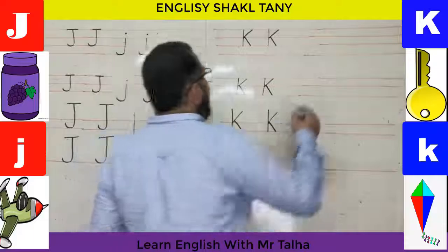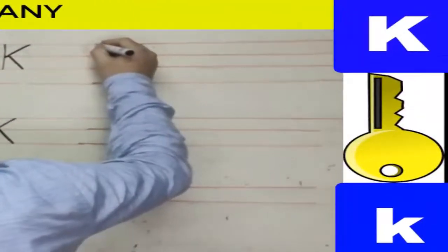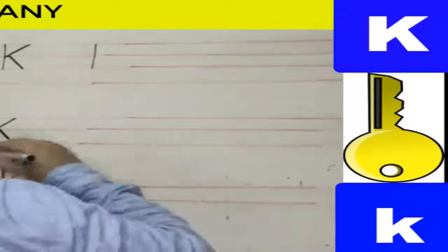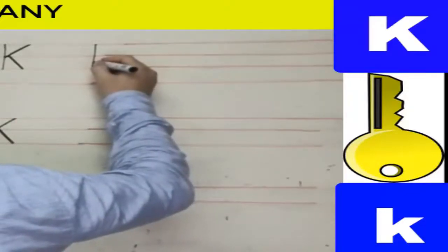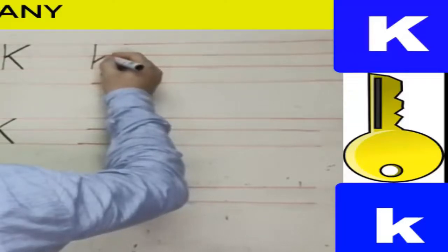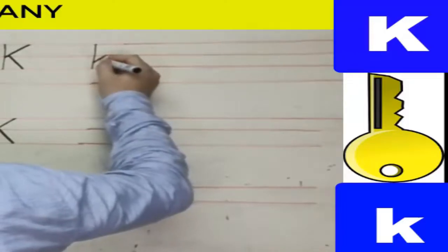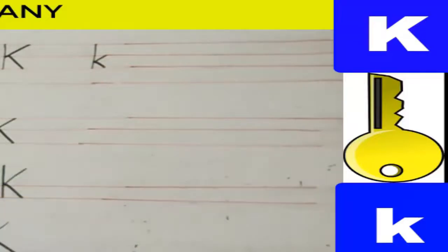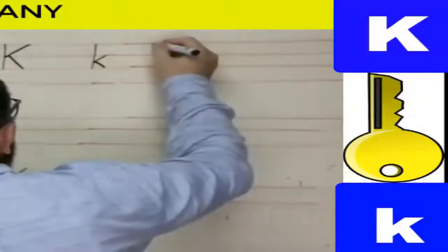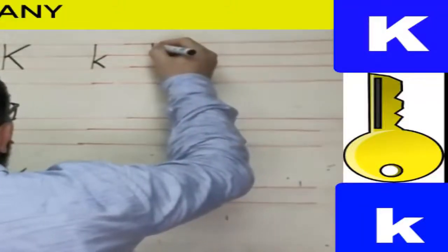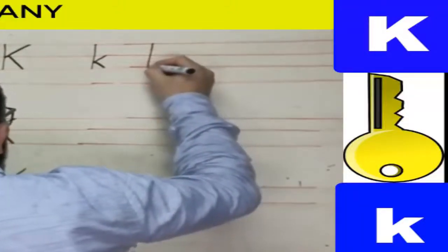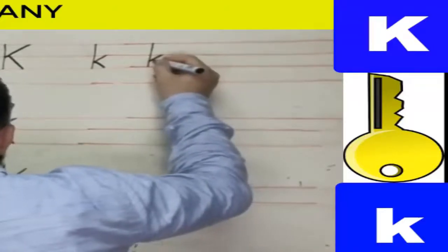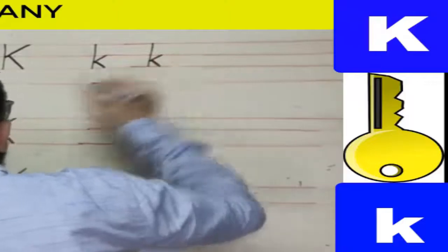Now for lowercase k on four lines: I start at the first line, go down to the third line, then between the two lines make a small diagonal line up and another diagonal line to the bottom. That's the small k. Again: start from the top, go straight down, then between the two lines make a diagonal to the top and a diagonal to the bottom.